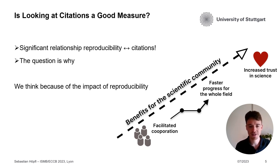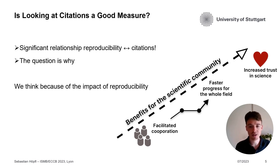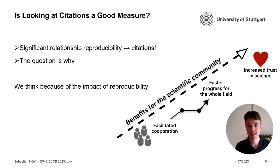We think this is because of the impact of reproducibility. Reproducible models have factors you don't have with non-reproducible models — for example, facilitated cooperation, as you can couple and share models easily. You have faster progress for the whole scientific field because you can reuse and extend these models. You will only cite them if you're able to reproduce them, because if you can't reproduce or use them, you won't cite them. You also have increased trust in science, as you can validate and falsify these models.